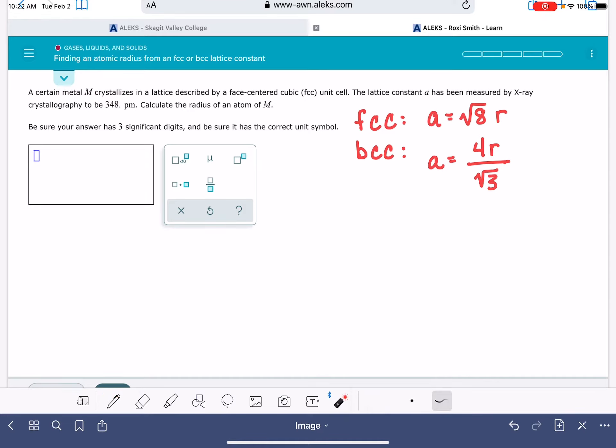So we'll select whichever one of these equations is appropriate based on the type of unit cell we have. In this problem, I have a face-centered cubic cell FCC, so this is the equation that I'm going to be using.